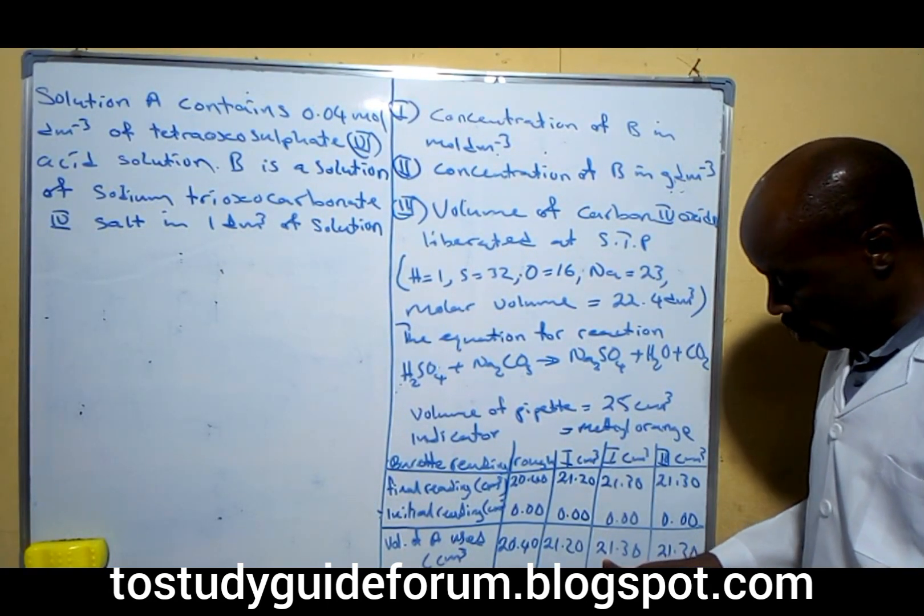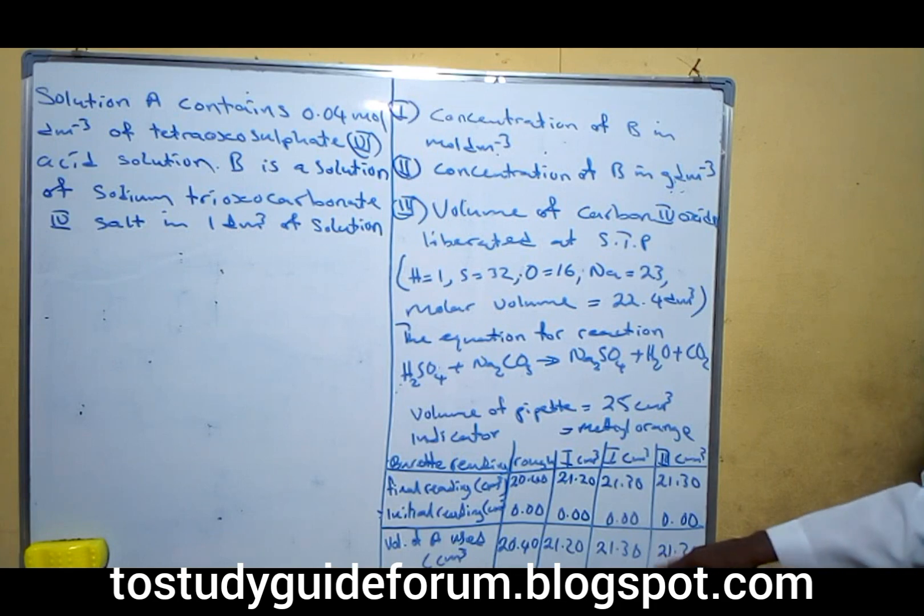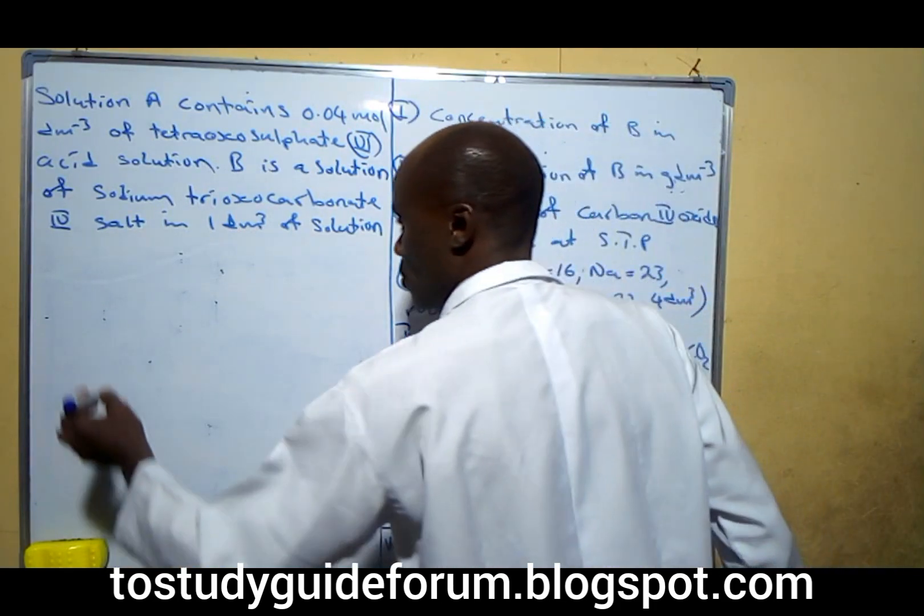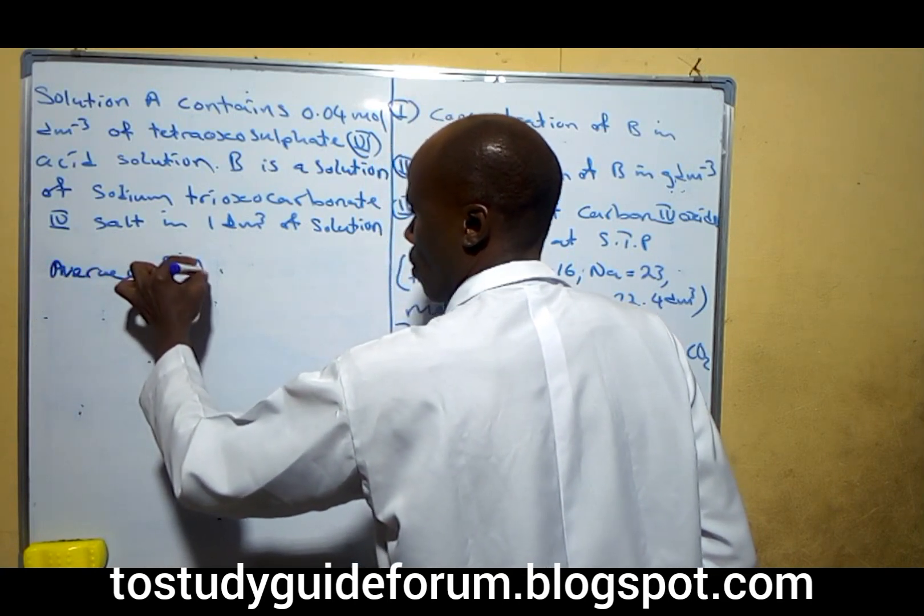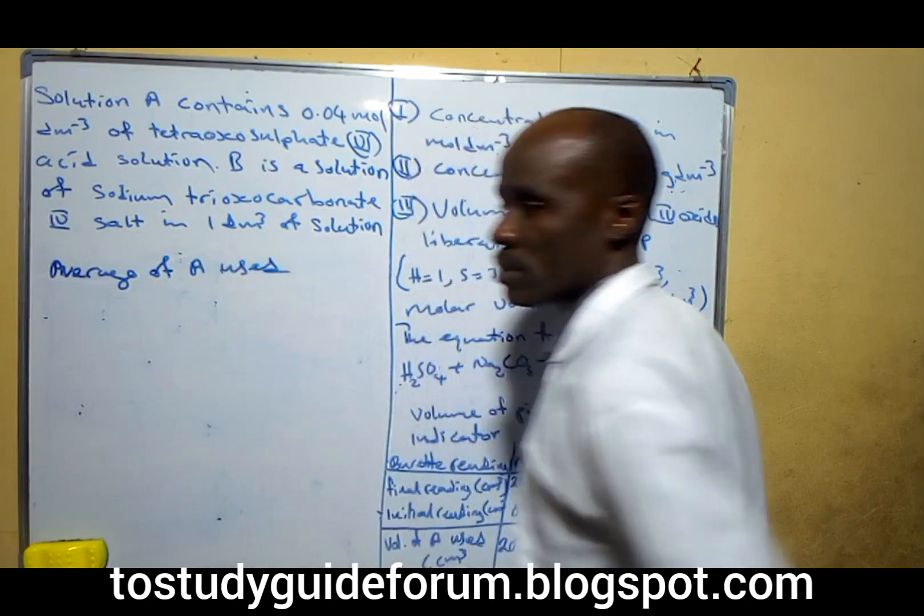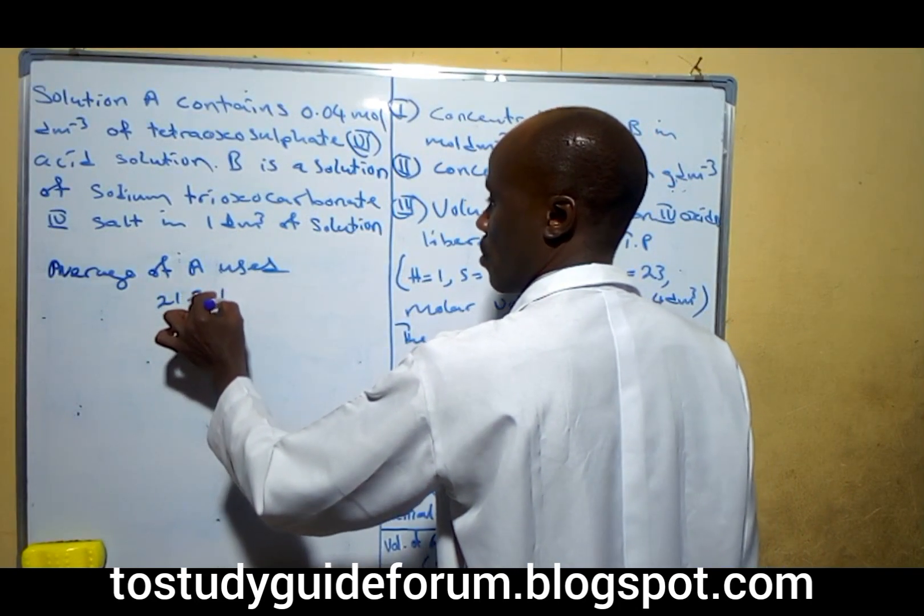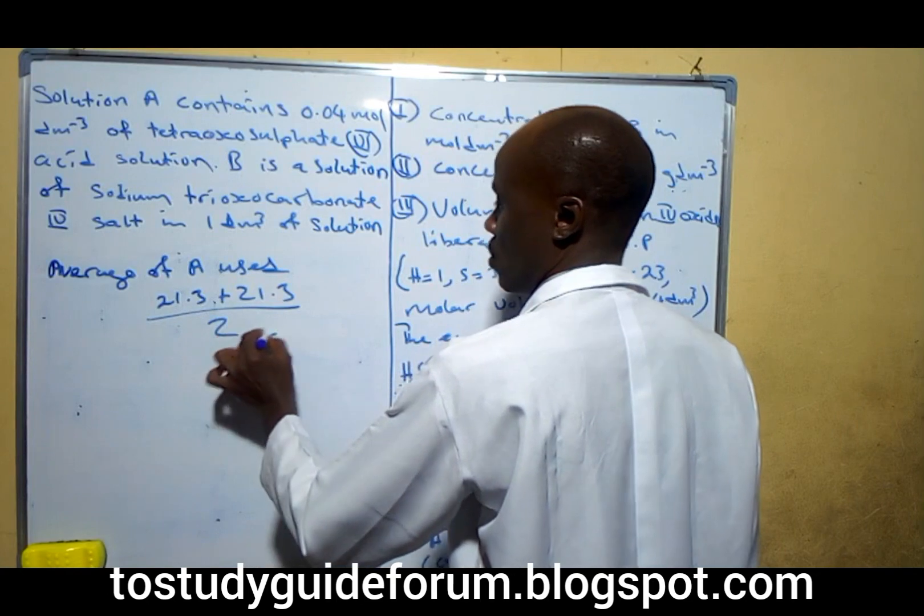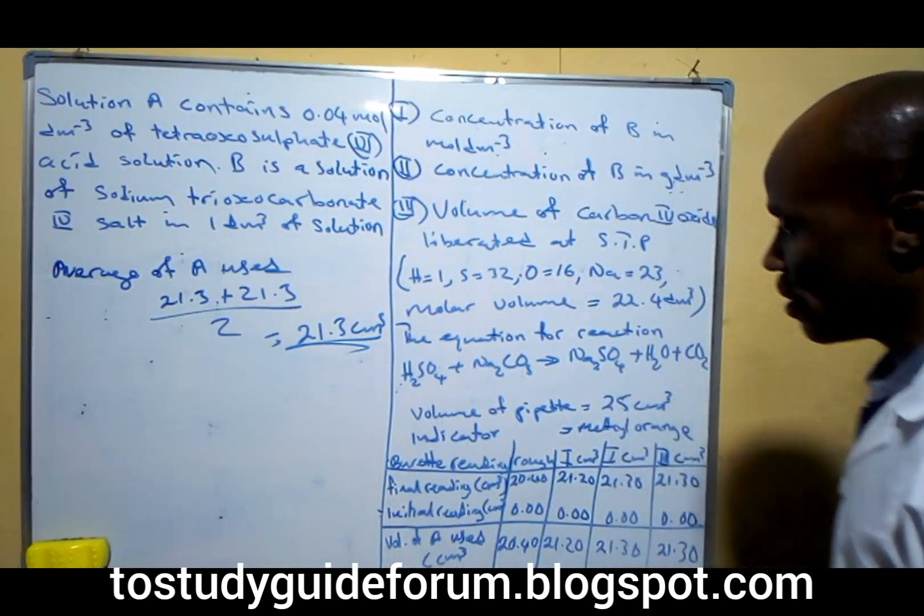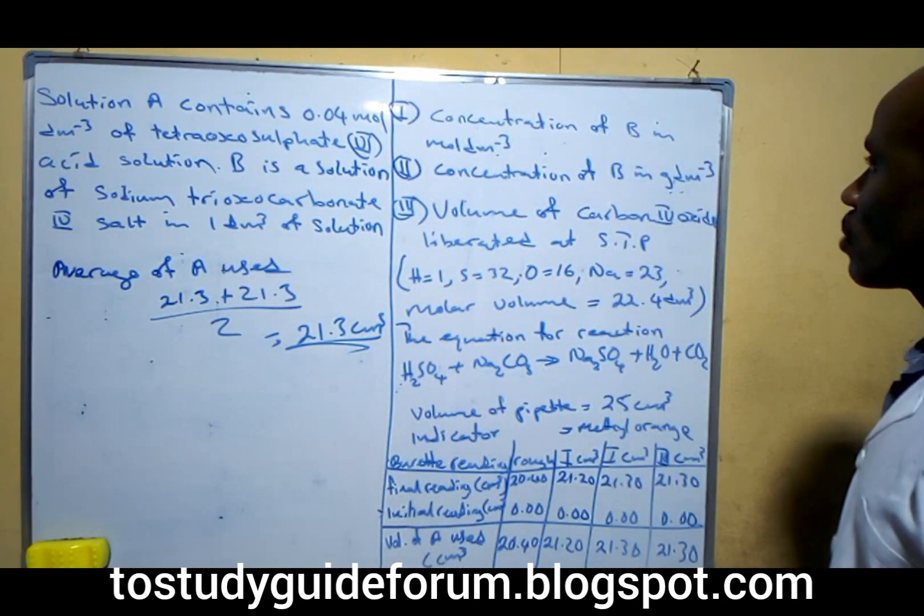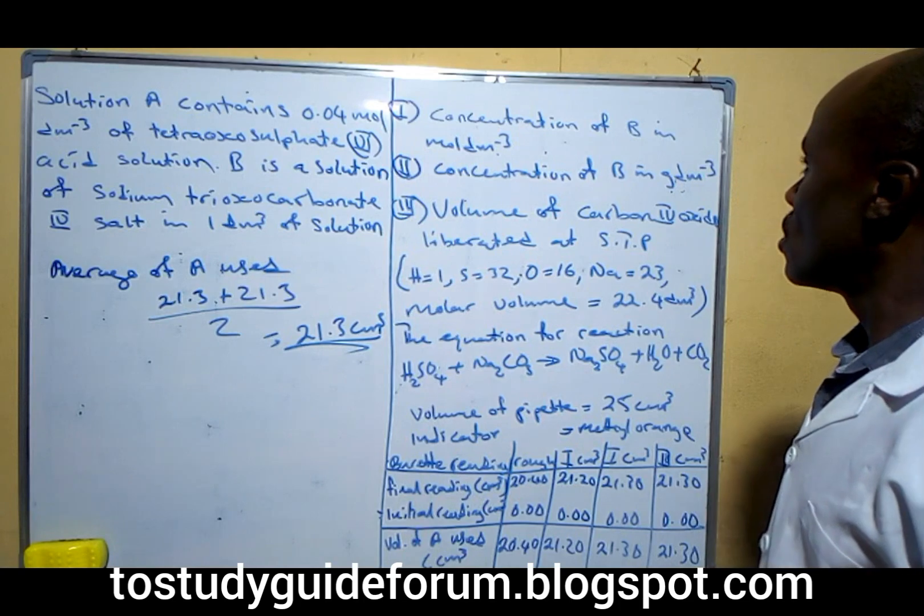To get the average volume of A used, we're going to use 21.3 and 21.3 which happen to be the same. The average volume of A used is 21.3 plus 21.3 all over 2. So we get 21.3 cm³. That's the first instruction, the information we have.